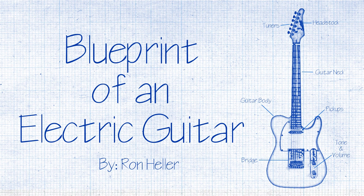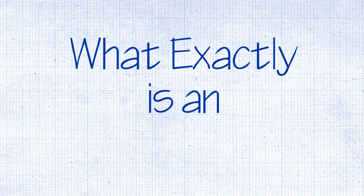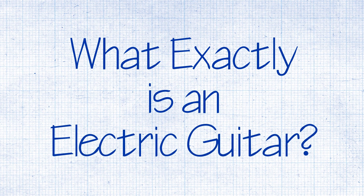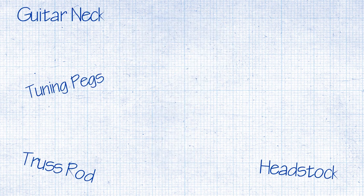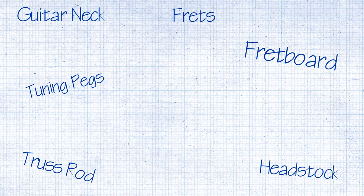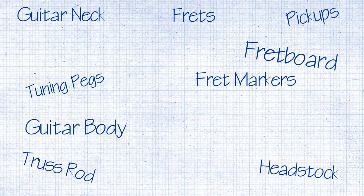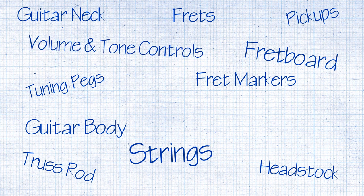Blueprint of an electric guitar by Ron Heller. What exactly is an electric guitar? An electric guitar is comprised of many different components. It produces its sound through string vibration, which is then converted into an electric signal that is sent to an amplifier.